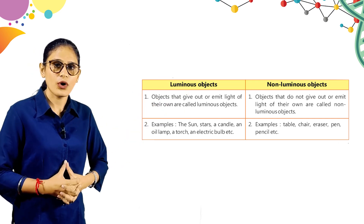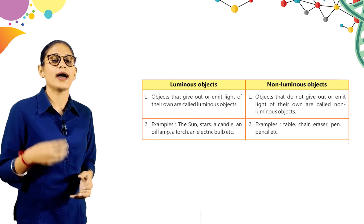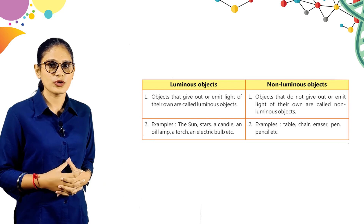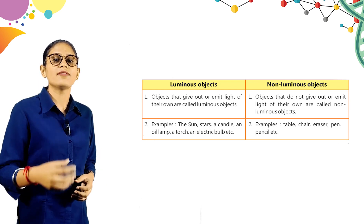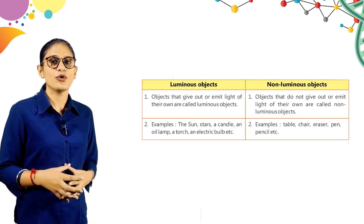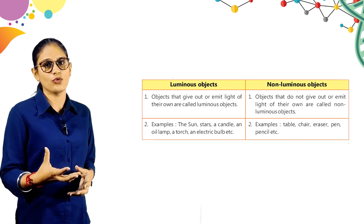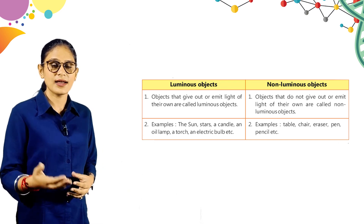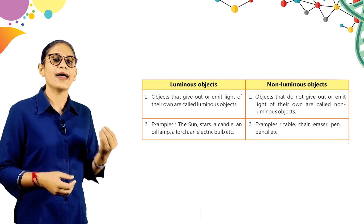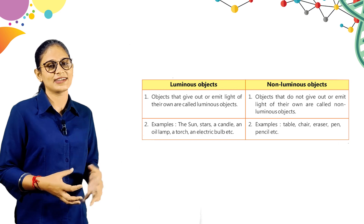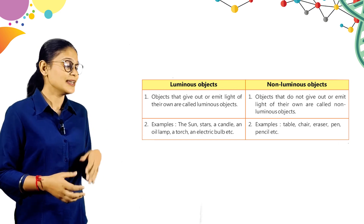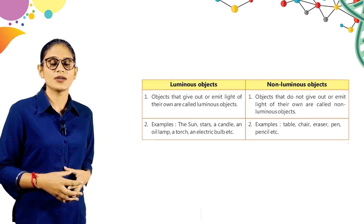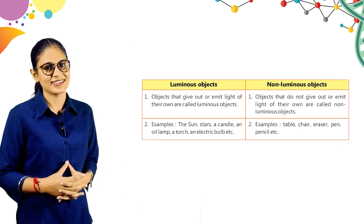Objects that give out or emit light of their own are called luminous objects. Objects that do not give out or emit light of their own are called non-luminous objects. Examples of luminous objects: the sun, stars, a candle, an oil lamp, a torch, an electric bulb, etc. Examples of non-luminous objects: table, chair, eraser, pen, pencil, etc.